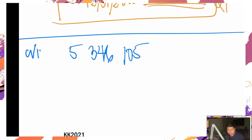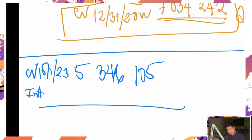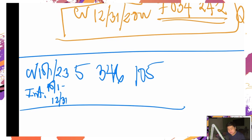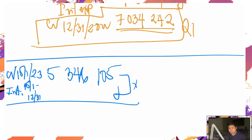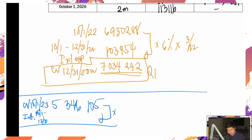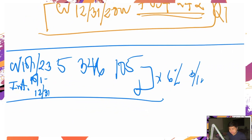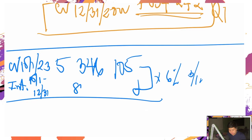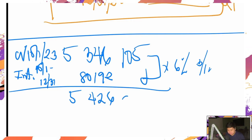Tubuhan mo para makuha yung bagong carrying value afterwards. Interest from October 1 hanggang December 31 — 3 months — times 6% times 3 over 12 = 80,192. Pag tinotal ko yan: 5,426,297. Yan ang carrying value mo at December 31, 2023.